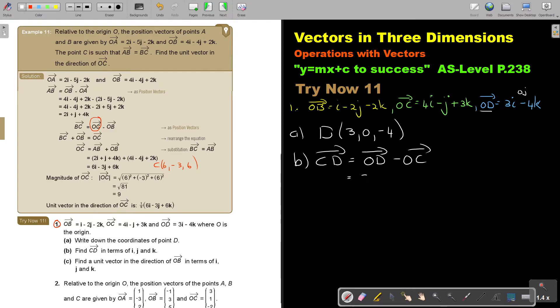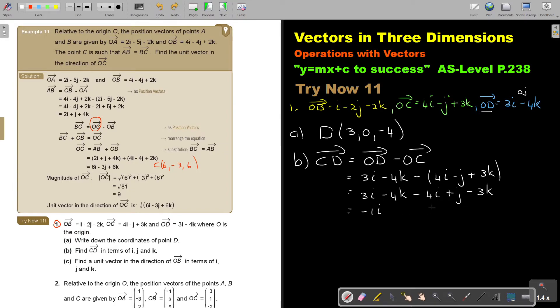OD is 3i minus 4k. OC is 4i minus j plus 3k. So CD equals OD minus OC, which is 3i minus 4k minus 4i plus j minus 3k. Simplifying, it's negative i.